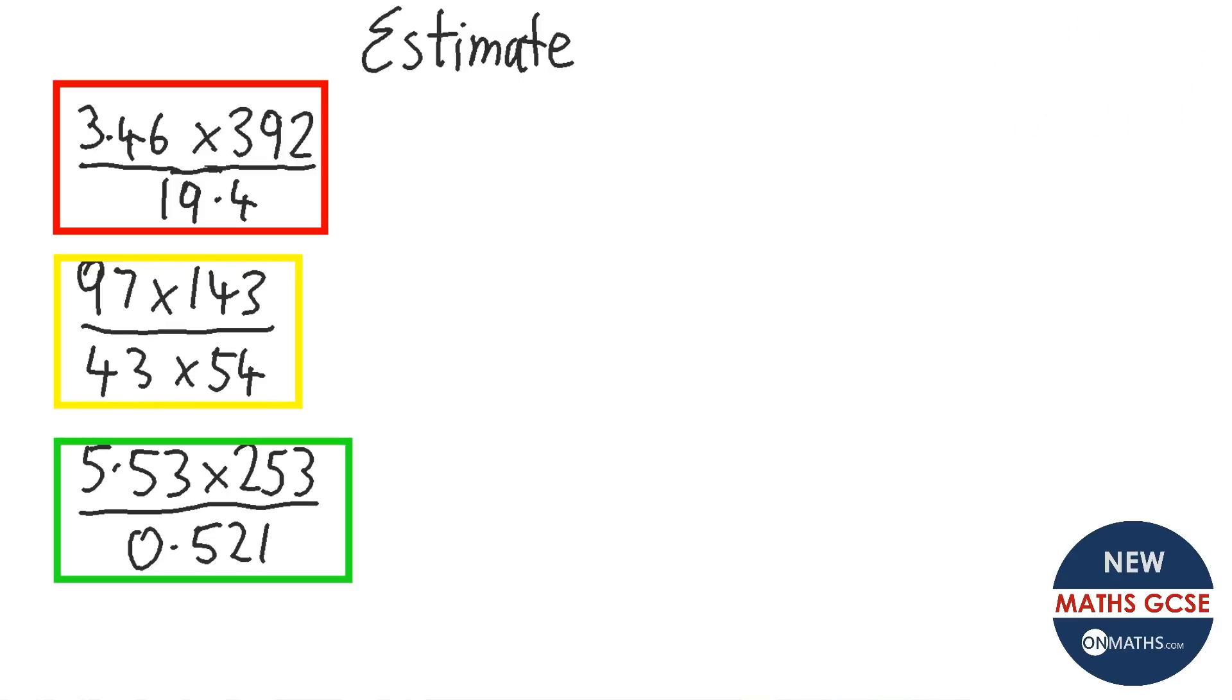Okay, so for this first question, we want to obviously round these to one significant figure. So we're going to round these numbers here. Okay, so that top number is going to be 3, the next one's going to be 400, and then the bottom one is going to be 20. So 3 times 4 is 12, and put on the extra two zeros. And again, I can divide them by 10. So 120 divided by 2, so half of 120 is 60.